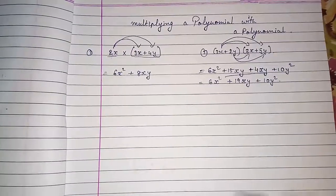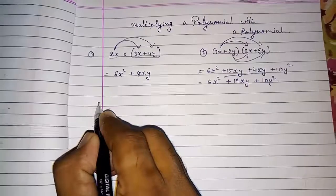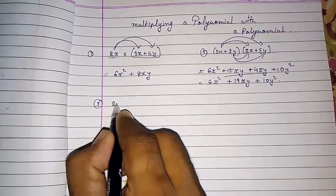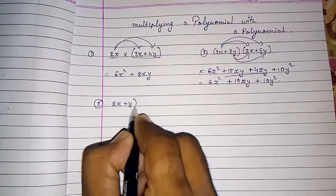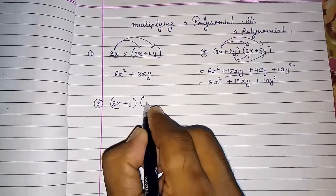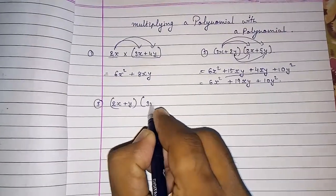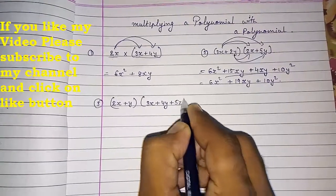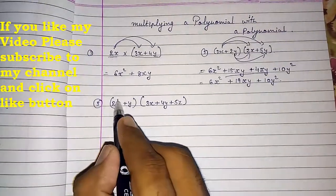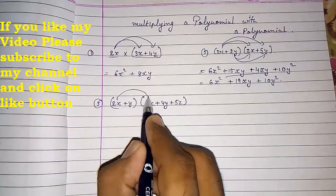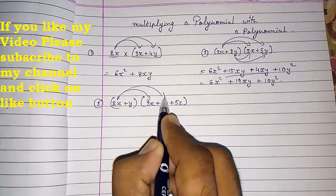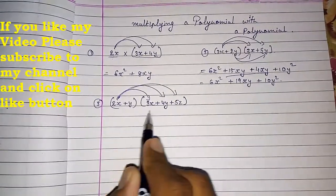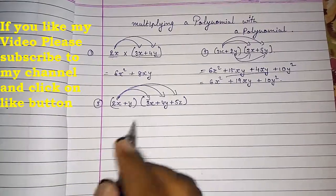If you want to multiply a binomial with a trinomial — for example, 2x plus y, multiplied by 3x plus 4y plus 5z — then what do you do? You have to first multiply 2x with all 3 numbers, and then y with all 3.